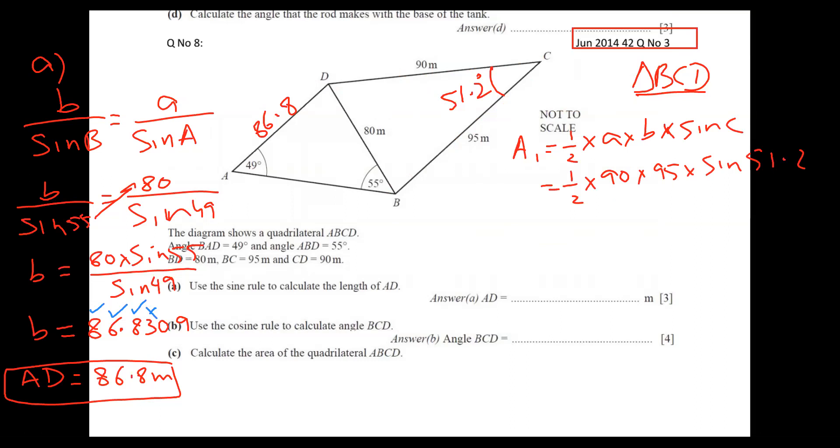And let me calculate this value: half into 90 into 95 into sine of 51.2. And this angle is - I'm sorry - area. 3331.6698 and I write the full value. Not centimeters, meter squared. Meter squared. This is coming A1.